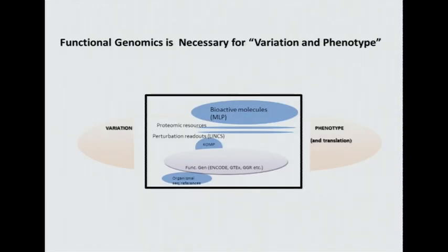There's another way of looking at this. This is just a schematic, a cartoon of the gap between variation and phenotype. It's taken from an old figure — you've seen newer figures illustrating the various categories of research and programs we have and how much we invest in them. This is taken from a somewhat outmoded view of that.